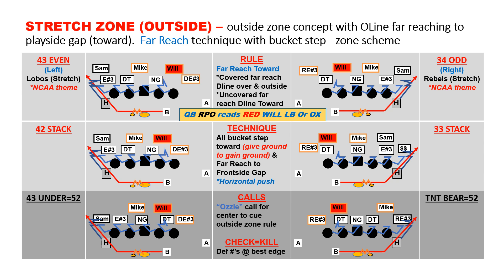The first family is our zone family. We're an outside-in attack, so we'll start with our stretch zone — this is just an outside zone or wide zone concept. We'll use what's called a far reach technique by the O-line. Everyone's going to go the same direction, far reaching towards the play call. We use an NCAA theme, Lobos to the left and Rebels to the right. If the lineman is covered, he's going to far reach to the D-lineman over him or to his outside. If the lineman is uncovered, he will far reach to the next D-lineman towards the play call.